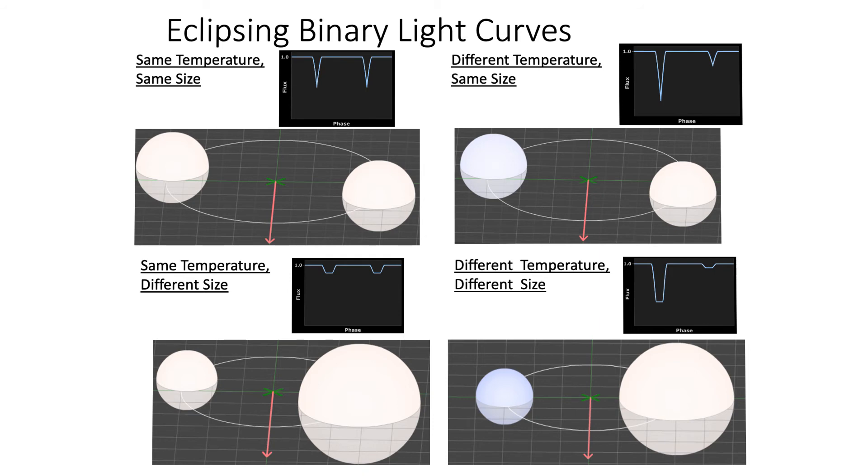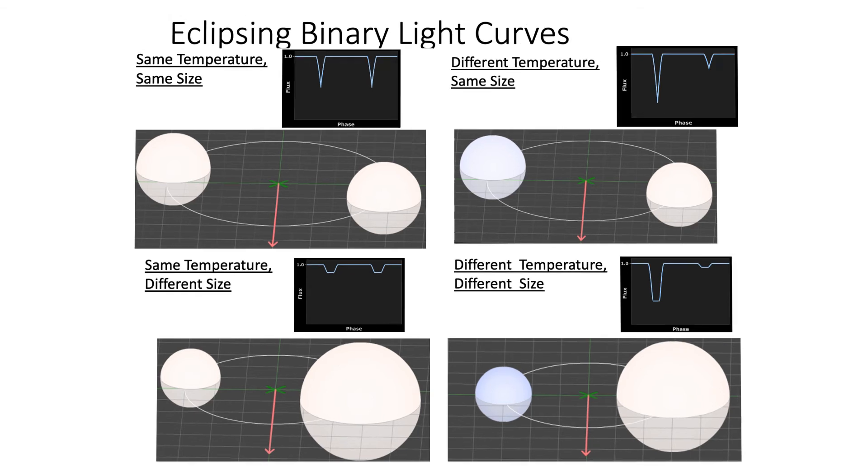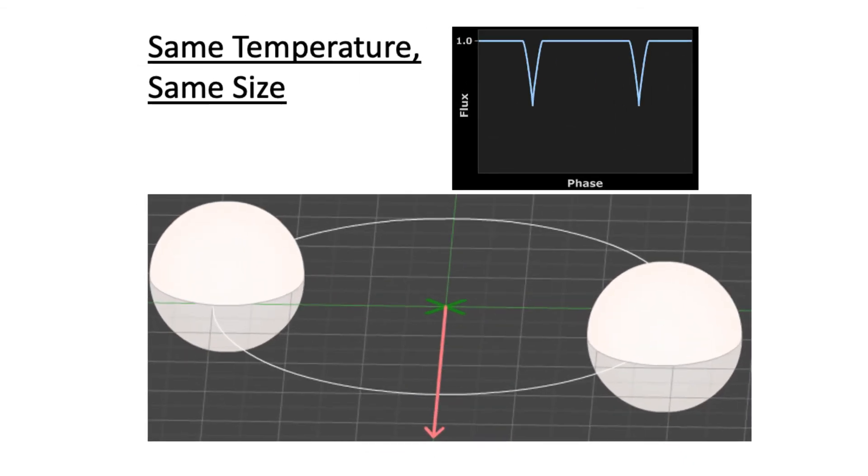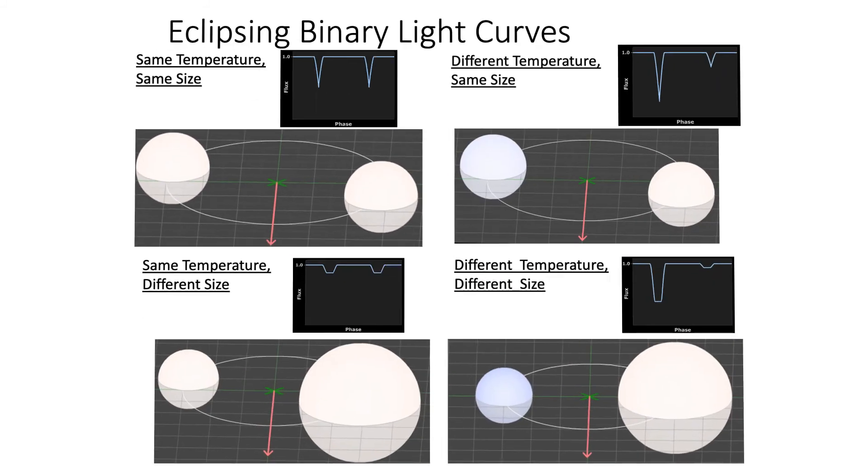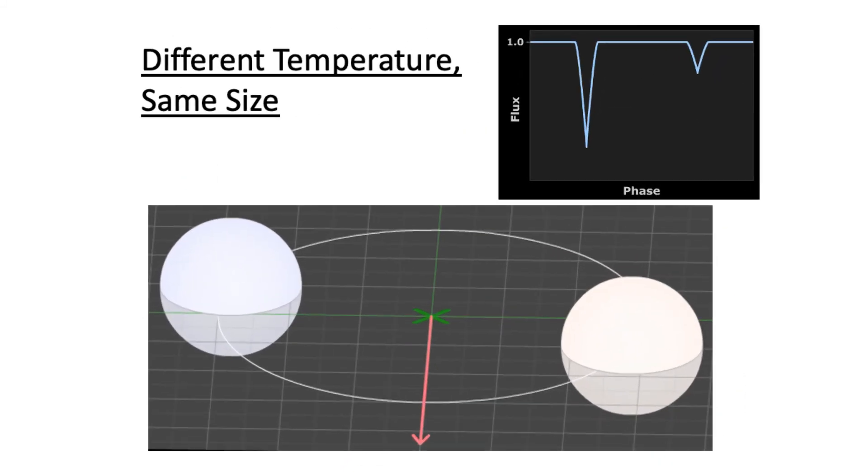In this graphic, we see all four broad categories of the limited parameter space shown in an eclipsing binary computer simulation. Same temperature, same size, which gives us pointed eclipses of the same depth. Different temperature, same size, which gives us pointed eclipses with different depths.